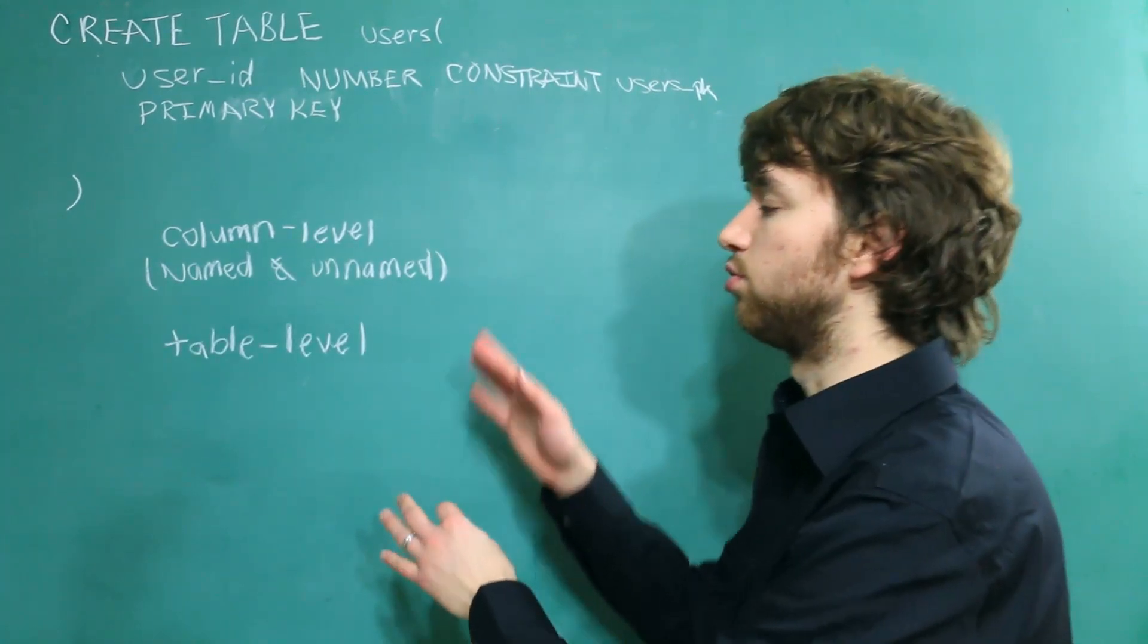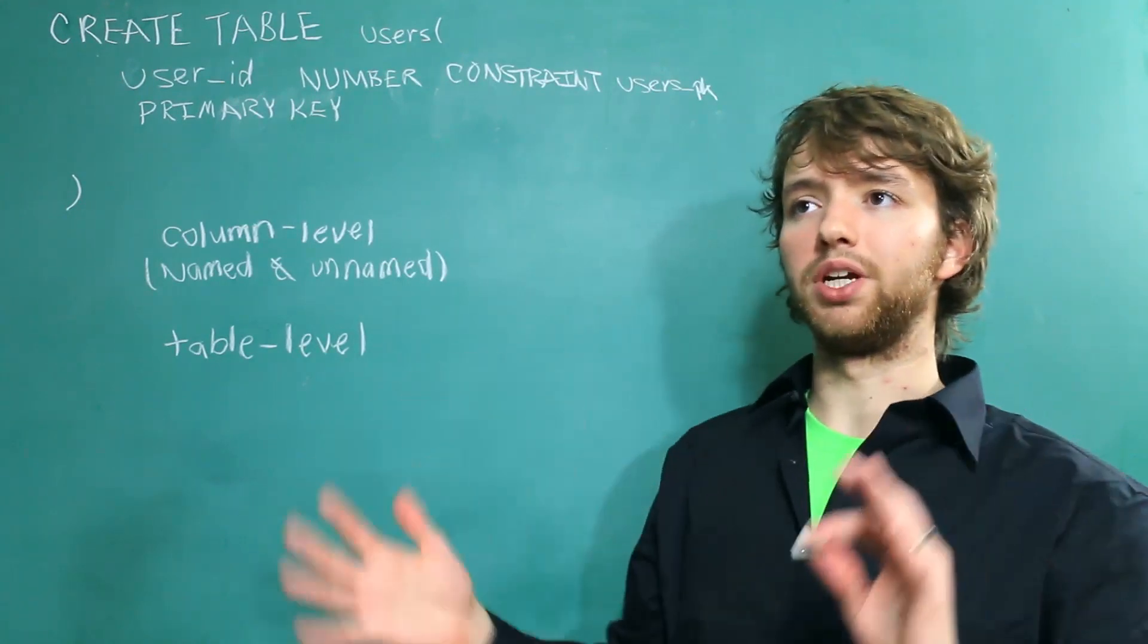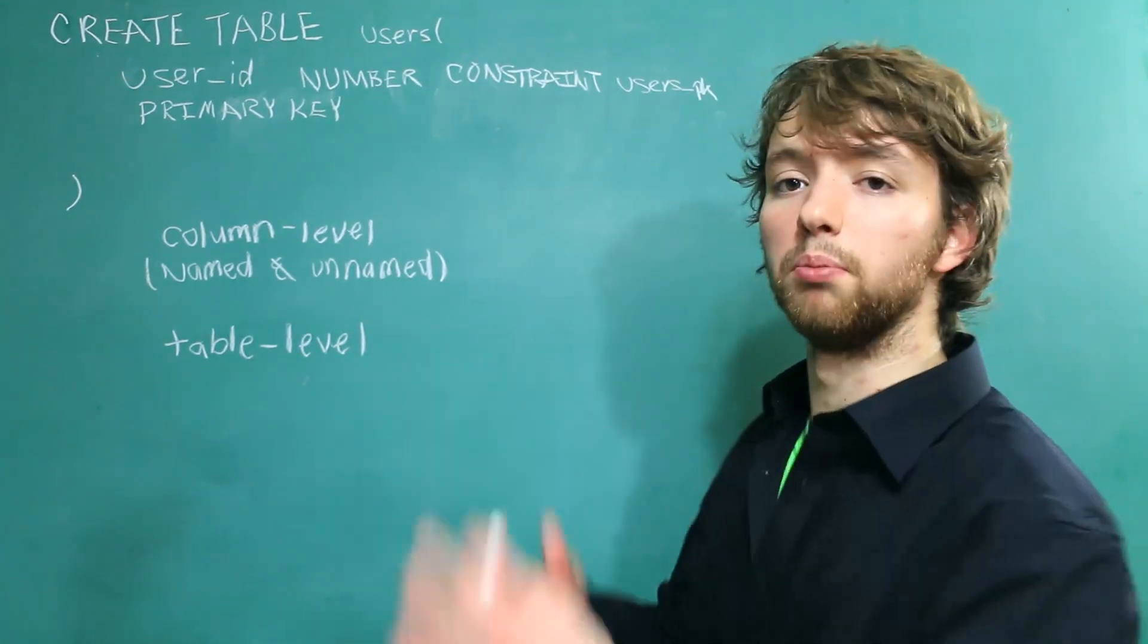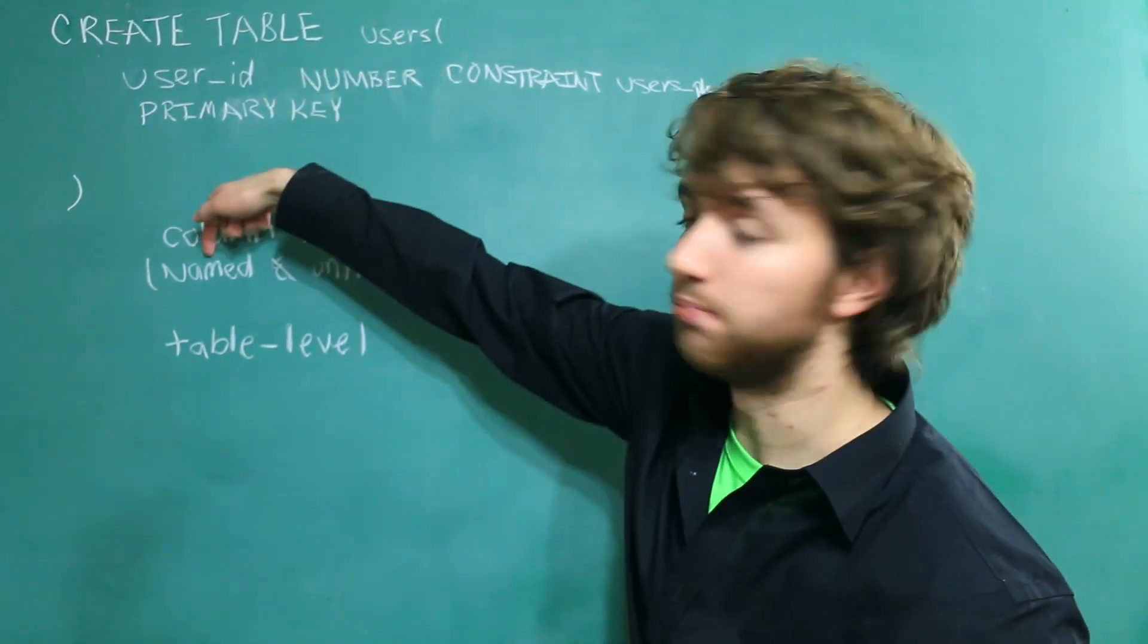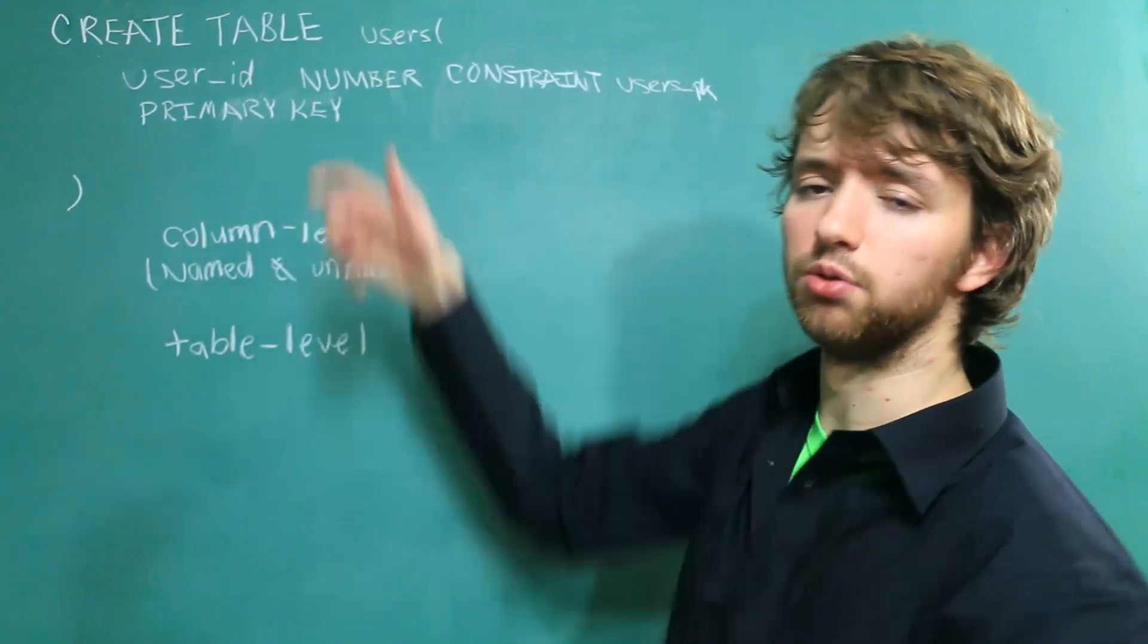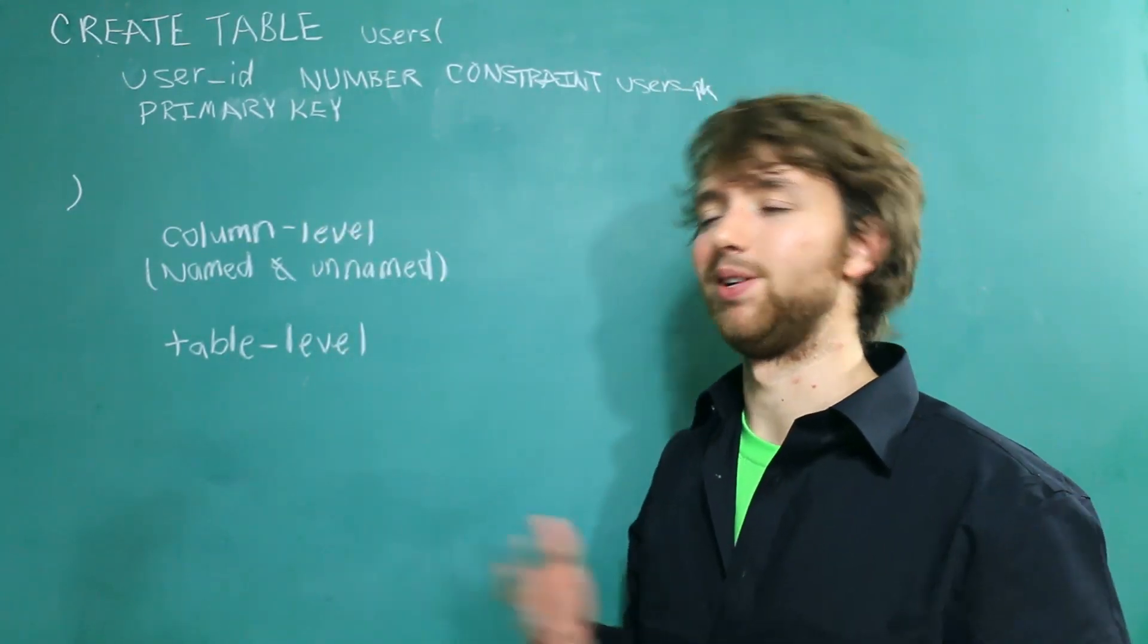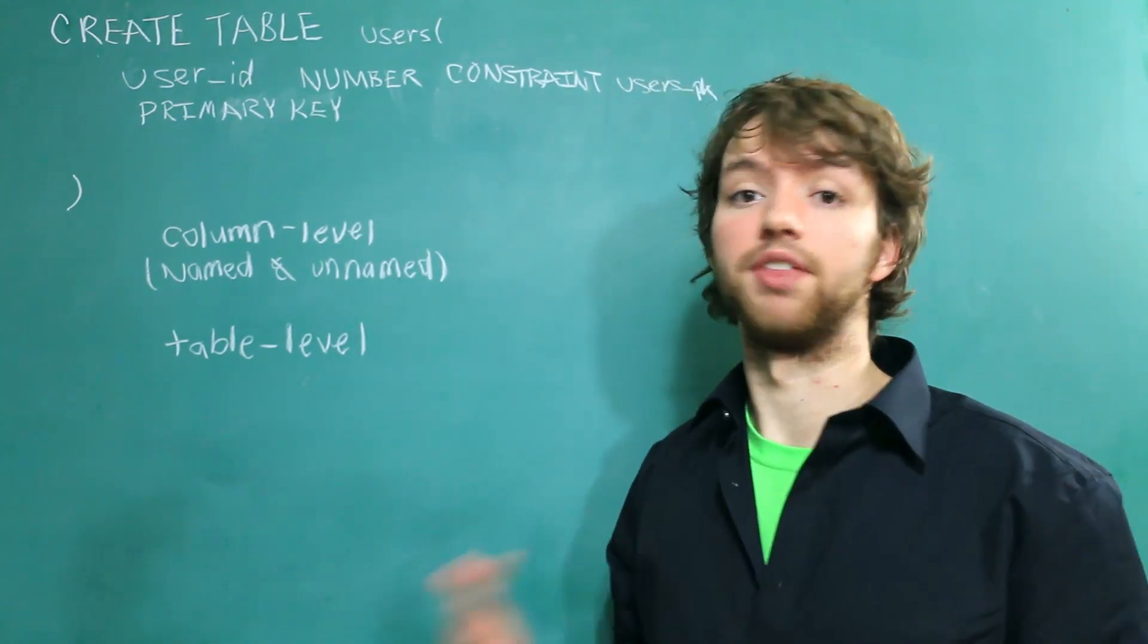I really recommend you take a look at this and memorize it so that you can understand three main different ways of creating constraints. From simple to complex, this is the easiest unnamed, then this is medium, and then table level is the most complex. But a lot of people like to do it at the table level. So it really just depends on what you prefer, and if you work for a company, what they prefer.